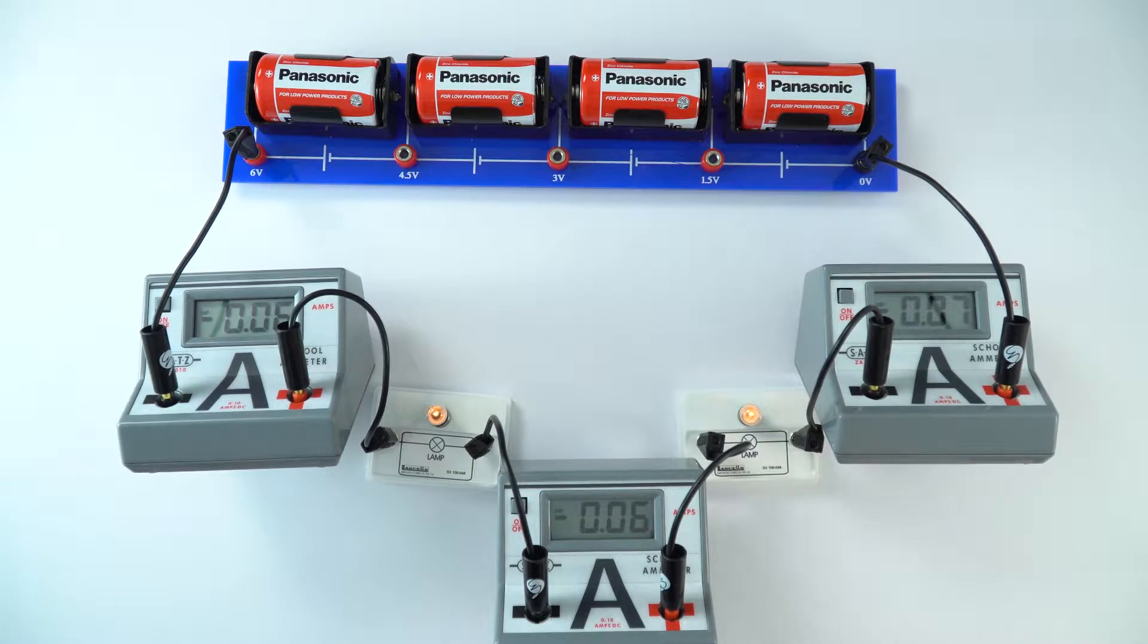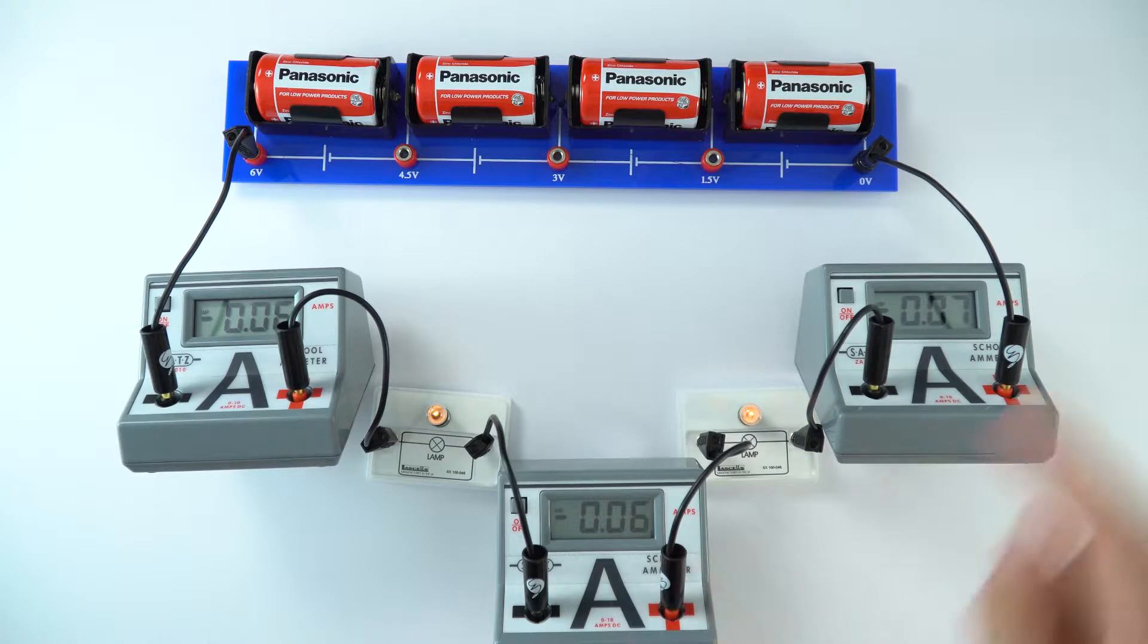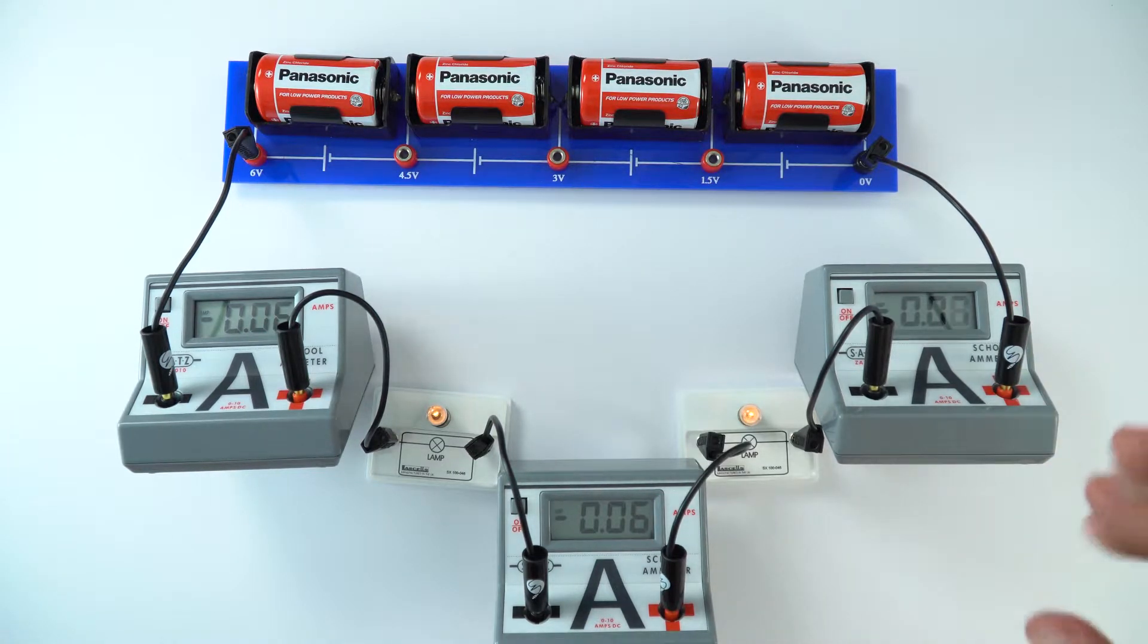What we're really looking at are the size of the values. So we've got 0.06, 0.06, and this one here is 0.06. Occasionally it flickers up to 0.07, which again is due to the accuracy of the instruments that we're using.